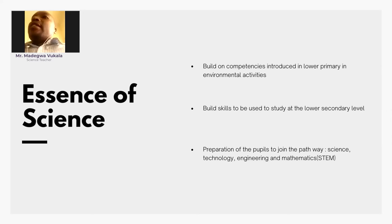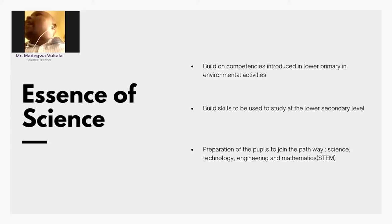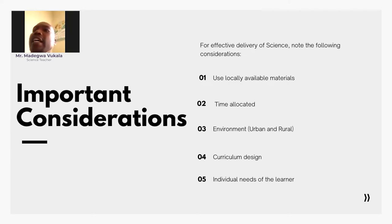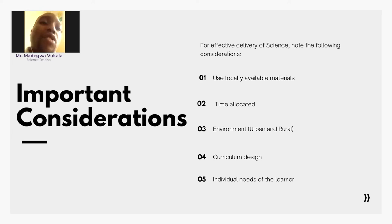Essence is a general overview of a learning area and summarizes fundamental ideas in science and technology. It is the individual needs of the learner — we have those that can learn very fast, and those that learn slowly. So you need to take care of individual learners' needs.